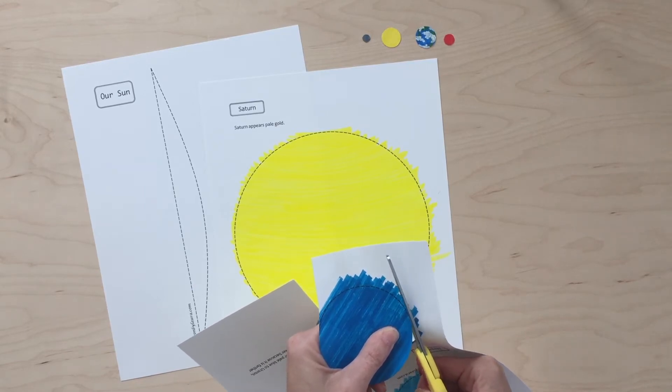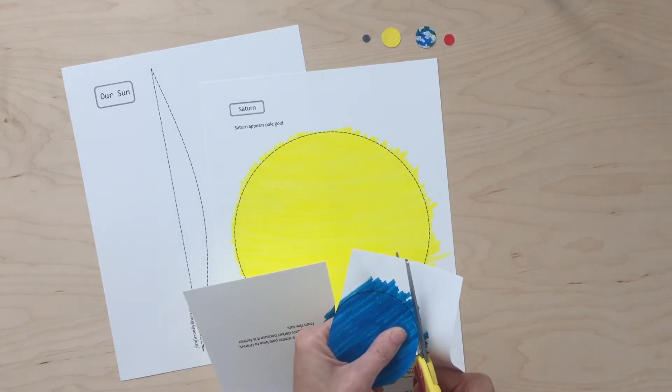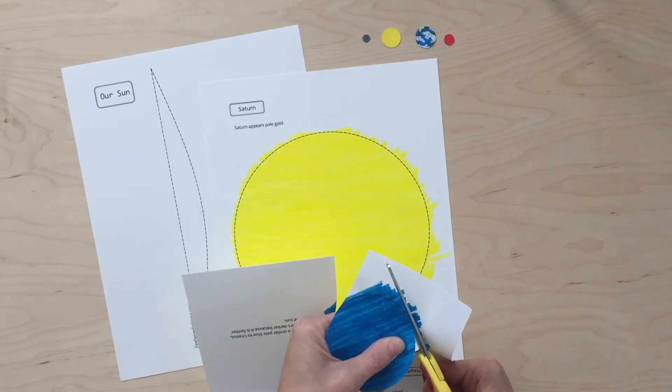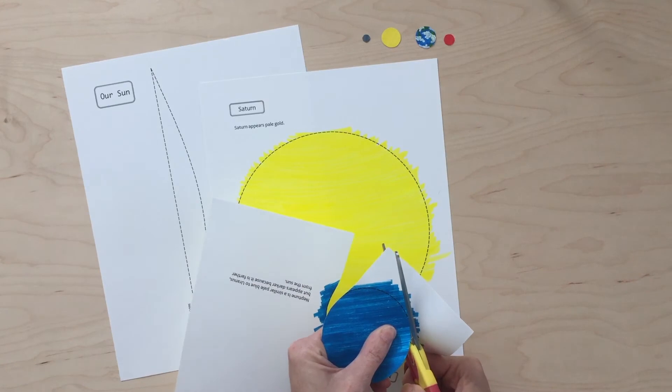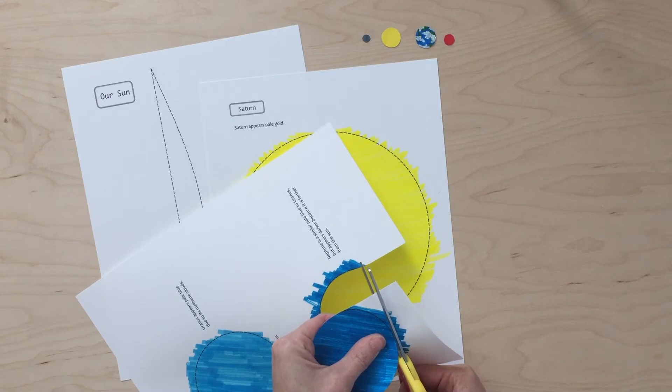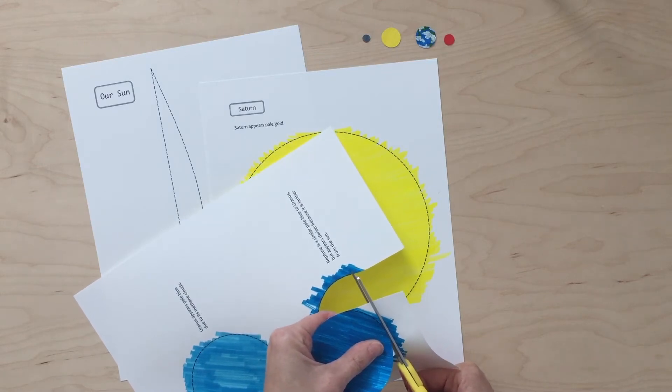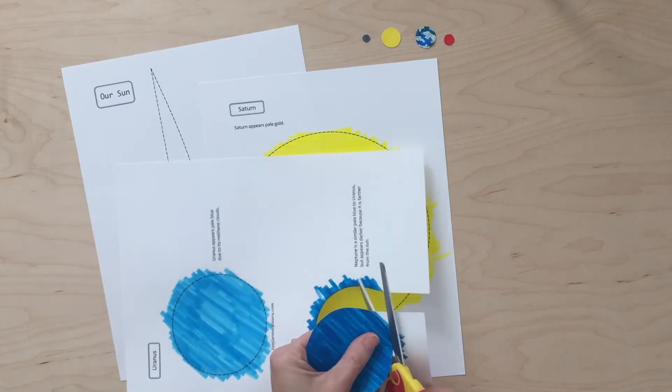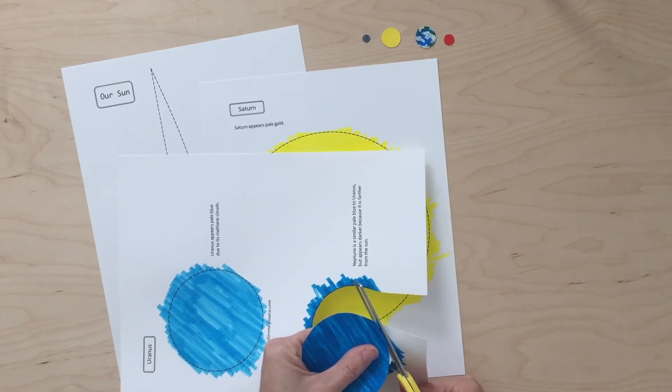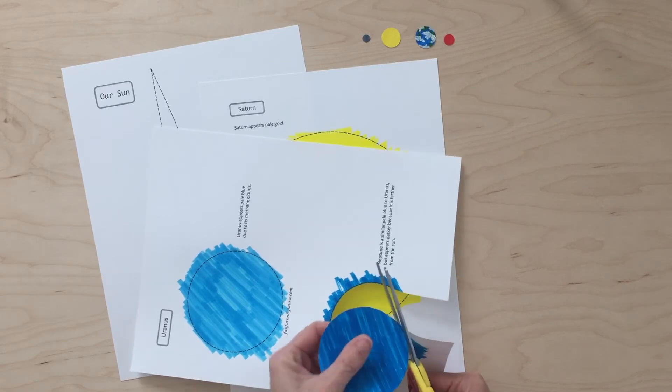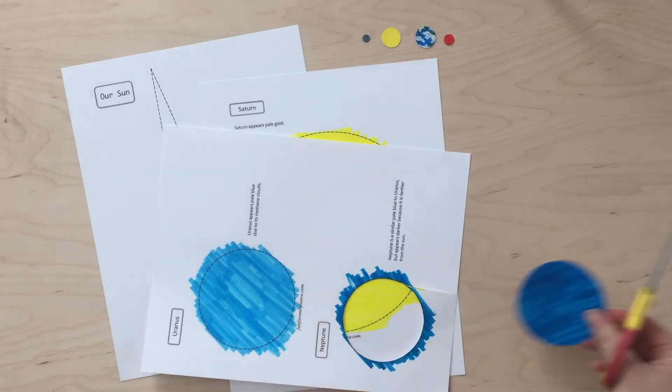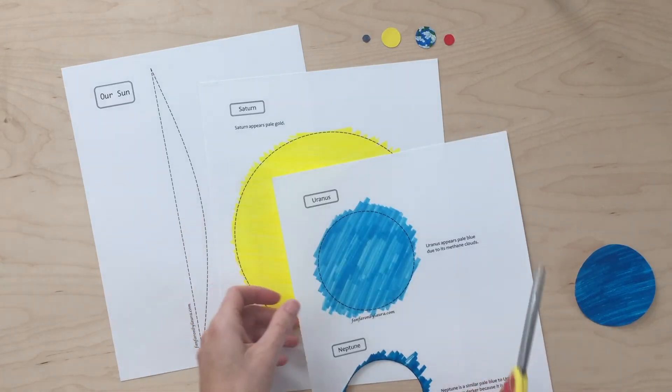You might also be wondering why I didn't make a whole sun. Well, all these planets are to scale, which means that their size is relative to each other. So in space, Jupiter is really huge compared to Mercury that's really tiny. Well, if I were going to make a sun to scale to the size of the planets that I made, it would need to be six feet tall and six feet wide. That would be huge. So I just gave you a tiny little piece of the sun instead.